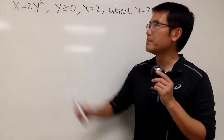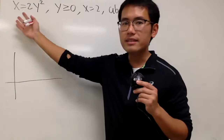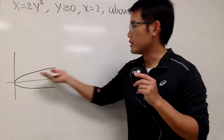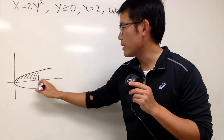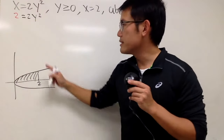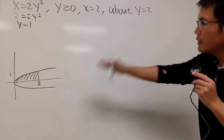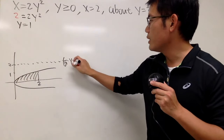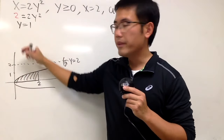We are going to find the volume generated by rotating the region bounded by x = 2y², y ≥ 0, and x = 2, rotated about y = 2. First a picture: x = 2y² is a sideways parabola opening right. We want y ≥ 0 (upper part) and x = 2. When x = 2, we get y = 1. So y goes from 0 to 1 in this region. The axis of rotation y = 2 is above the region, so we draw a dashed line there.